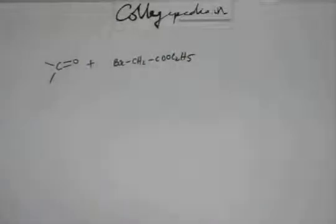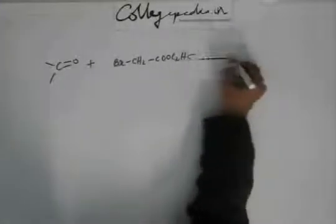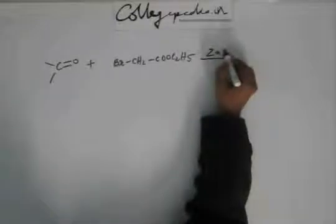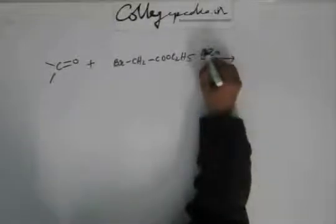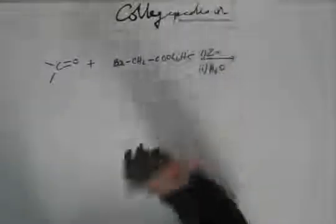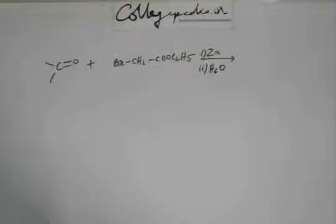If I have taken this alpha bromo ester and I have taken a carbonyl compound along with this I have added zinc and a little amount of heat just to increase the rate of reaction, and later I'll be adding water after the reaction with zinc is over. Now, you have to reach to the final product. What product are you going to get?